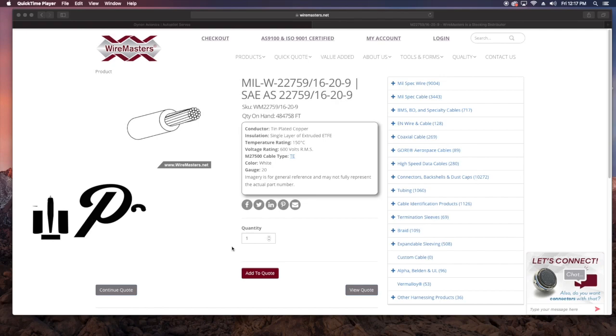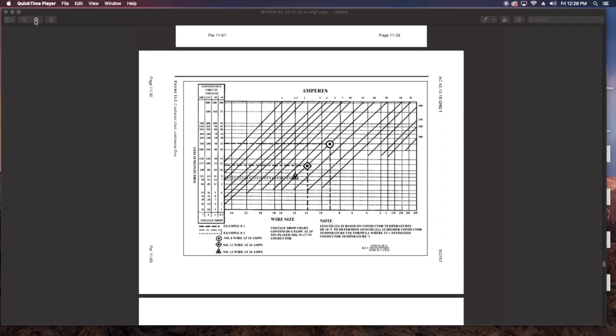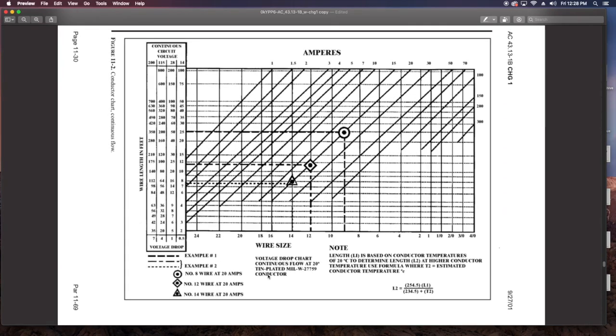You'll find that most installations out there use a mil-spec wire 22759-16, and I personally use this for everything I can. It's a Tefzel-coated wire with a tin plating on the conductor to help it not oxidize over time. It's flexible to work with and accepts crimp and solder connections well. It's rated up to 600 volts, and the Tefzel can withstand temps of 150C, 300 degrees Fahrenheit. It's also the wire that most of the charts in the 4313 are based on.